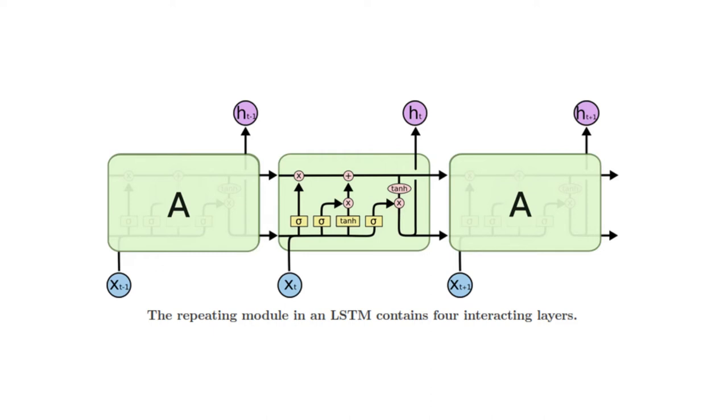In the given diagram, each line carries an entire vector from the output of one node to the input of another. The pink circles represent pointwise operations like vector addition, while the yellow boxes are learned neural network layers. Lines merging denote concatenation, while a line forking denotes its content being copied and the copies going to different locations.